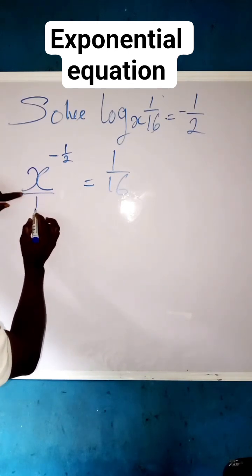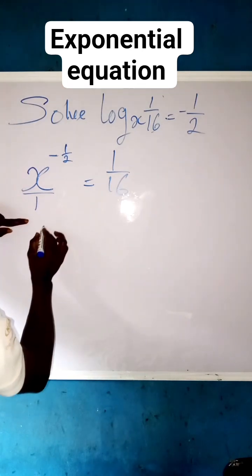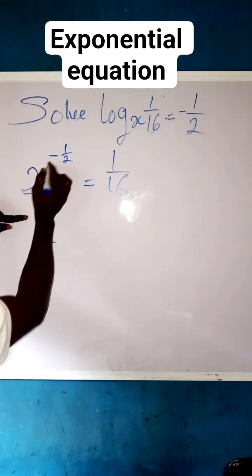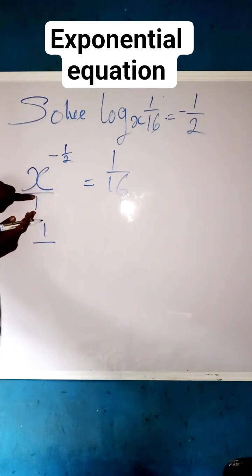X is also having 1 over 1, so this 1 that is down will come up, which is the reciprocal of this base. This base here will come up, then this x will come down.